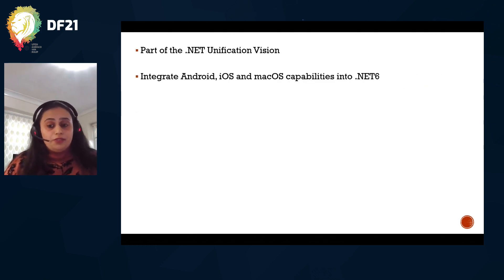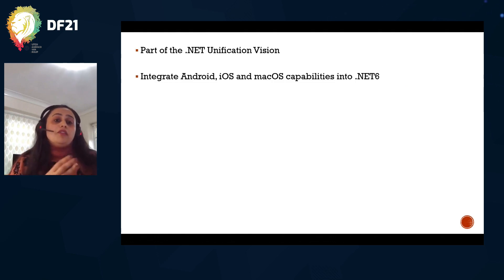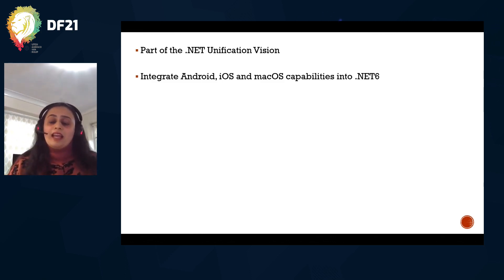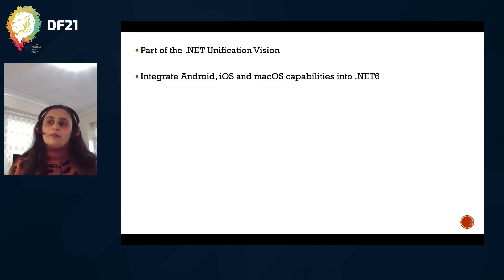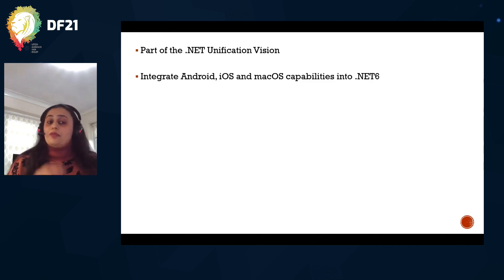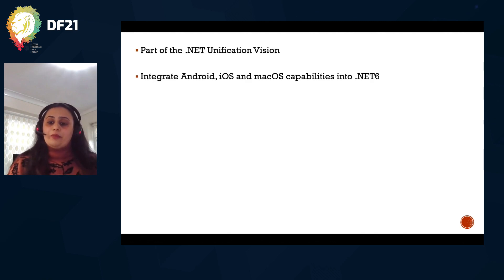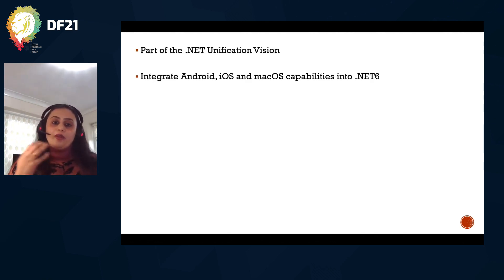.NET MAUI is part of the .NET Unification Vision. When unification started with .NET 5, the first deliverable was Blazor WASM. With .NET 6, all the Xamarin capabilities have been enhanced and made part of .NET 6. We now have platform-specific frameworks for Android, iOS, Mac, and Windows UI 3, and .NET MAUI interacts with all of them.